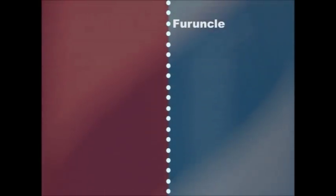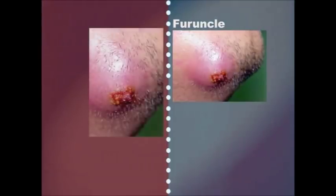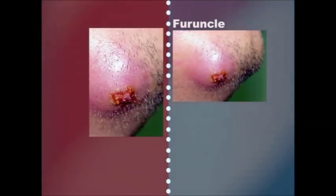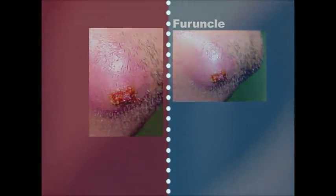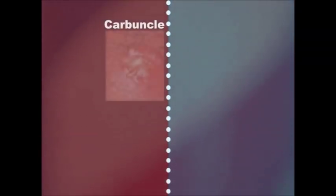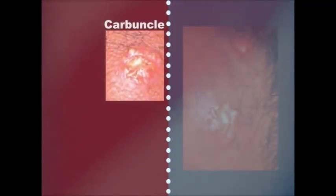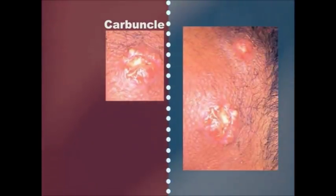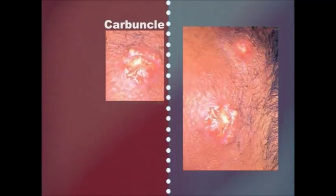A furuncle, or boil, is an acute bacterial infection of a hair follicle, producing constant pain. A carbuncle is the result of an acute deep-seated bacterial infection in the subcutaneous tissue. It is similar to a furuncle or boil, but it is larger, and is also associated with acute infection and fever.